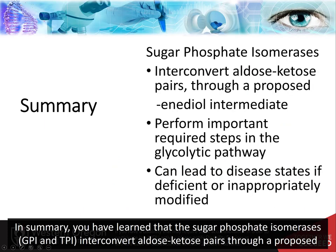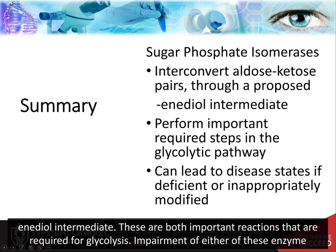In summary, you have learned that the sugar phosphate isomerases — phosphoglucose isomerase and triose phosphate isomerase — interconvert aldose-ketose pairs through a proposed enediol intermediate. These are both important reactions that are required for glycolysis. Impairment of either of these enzyme functions can lead to disease states.